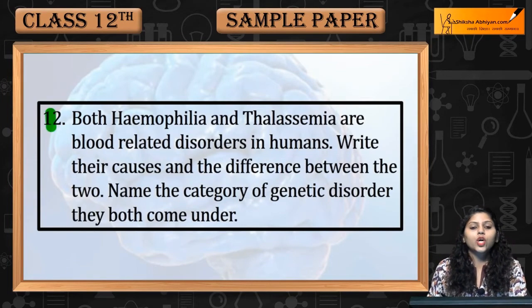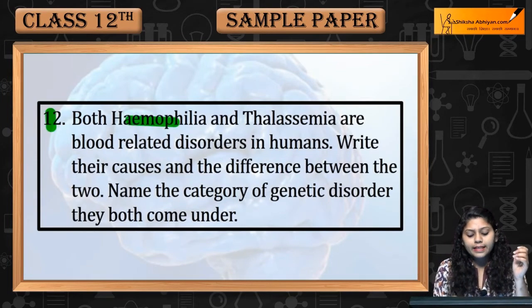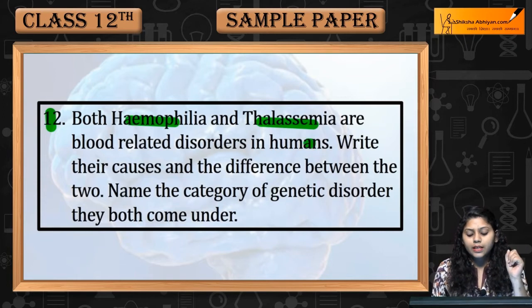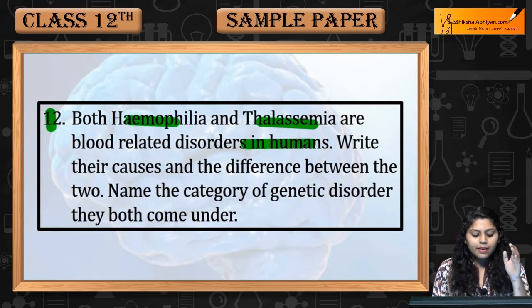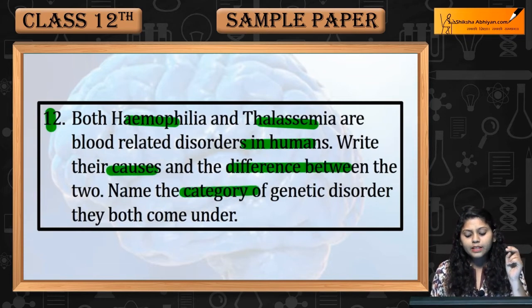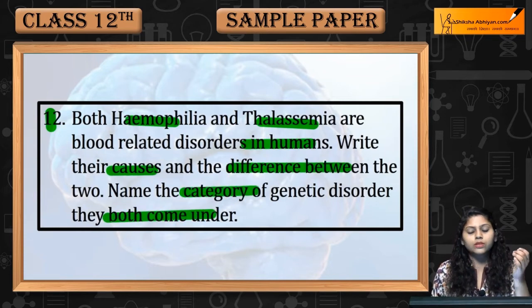Question 12. Both hemophilia and thalassemia are blood-related disorders in humans. Write their cause, difference between the two, and name the category of genetic disorder they both come under.